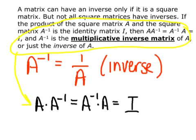A matrix can have an inverse only if it is a square matrix — 2 by 2, 3 by 3, etc. But not all square matrices have inverses. If the product of square matrix A and A to the negative 1 is the identity matrix, then A times A to the negative 1 equals A to the negative 1 times A equals I. So A to the negative 1 is the multiplicative inverse matrix of A.